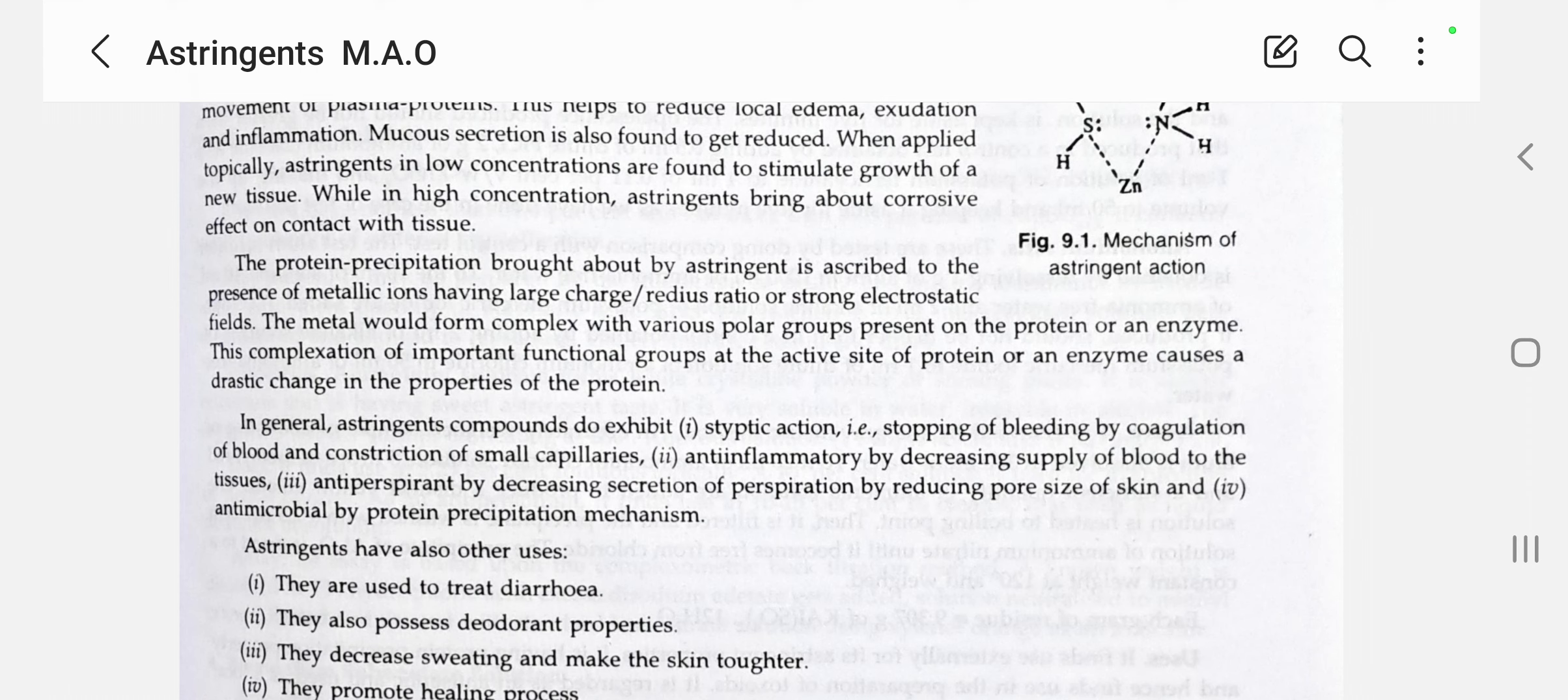Next is anti-inflammatory action by decreasing supply of blood to the tissue to reduce edema. Astringents reduce anti-inflammatory response by decreasing supply of blood to the tissue. Next is antiperspirant action by decreasing secretion of perspiration by reducing pore size. Perspiration is sweating, so antiperspirant decreases the secretion of perspiration by reducing pore size of the skin.